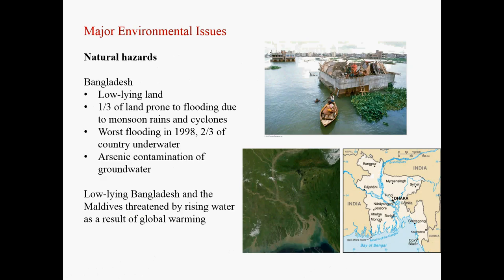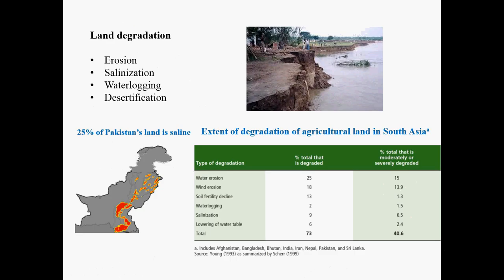Another problem is land degradation. We already talked about the erosion problem that occurs in some river valleys. Another cause of land degradation is salinization — when the land becomes too salty. Salinization takes place when you develop irrigation agriculture in arid and semi-arid conditions. You put a lot of water into the land, and under these conditions, strong evaporation brings a lot of minerals to the surface. Eventually, those minerals kill the crops and make the land degraded.